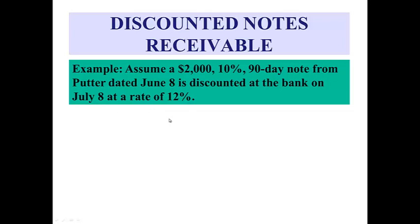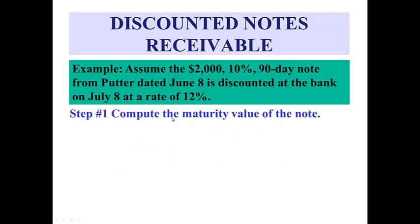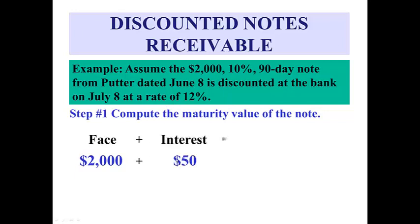Calculating a discount is a four-step process. The first step is to compute the maturity value of the note. The maturity value is just the principal plus the interest. The principal here is $2,000. The interest on $2,000 at 10% for 90 days is $50. So our maturity value is $2,050.